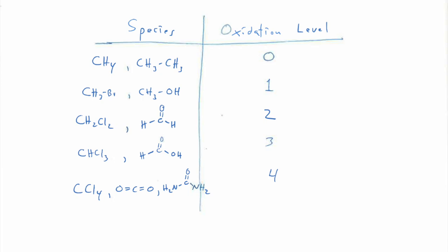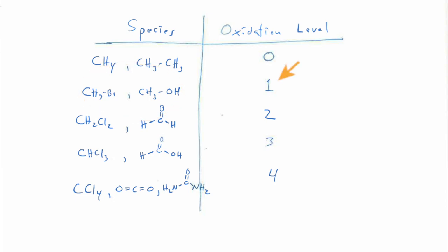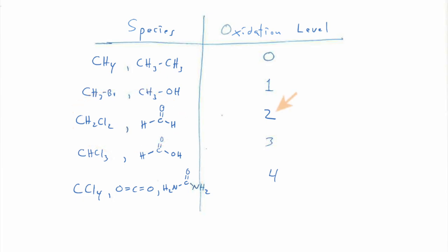Here are some common carbon species that exemplify the different oxidation levels. Simple things like alkanes, where you just have carbon bonded to hydrogens or other carbons — completely non-electronegative atoms — are considered to be in oxidation level zero. If you have a carbon bonded to one electronegative atom, like an alkyl halide or an alcohol, those carbons are in the first oxidation level. If you attach two electronegative atoms, like two chlorines in a dihalide, that carbon is in the second oxidation level.